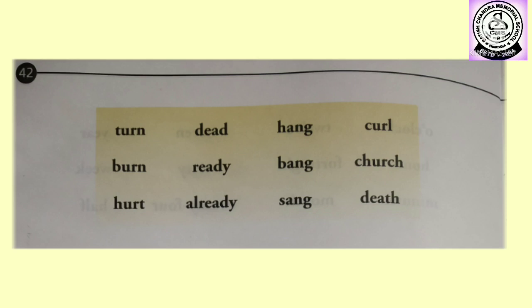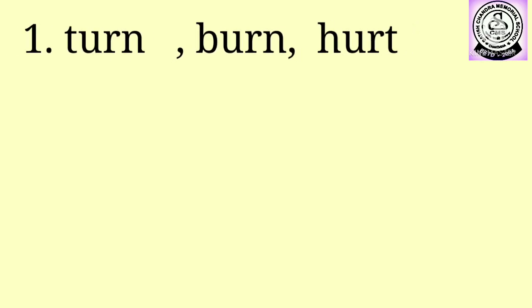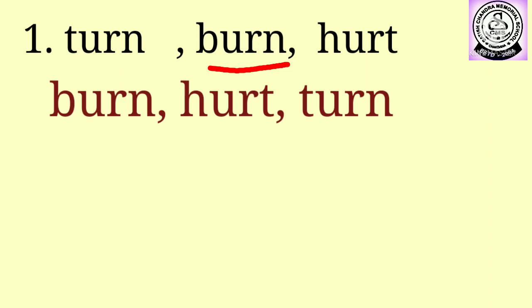Children, in our previous video we all have learnt about the alphabetical order. Here all four lists of words we have to write down in alphabetical order. So in number one list there are words like turn, burn, hurt. These three words you have to write in alphabetical order. So according to the alphabetical order, letter B — that is burn, B-U-R-N — will come first. Next H-U-R-T hurt, and then T-U-R-N turn.